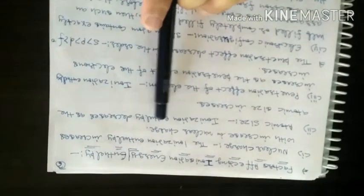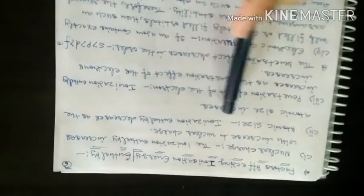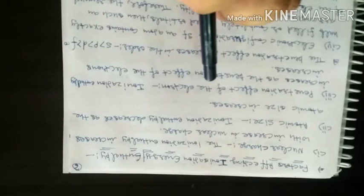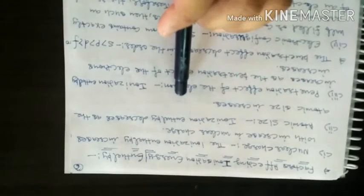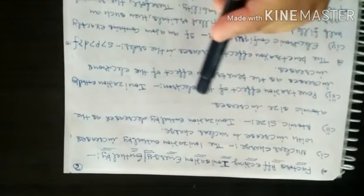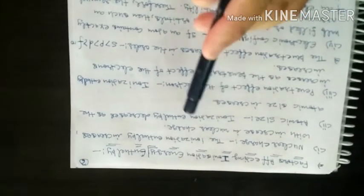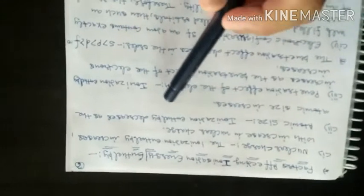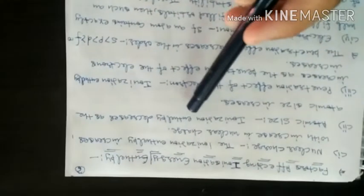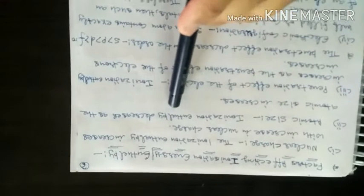The second factor is atomic size. Ionization enthalpy decreases as atomic size increases. As we go down the group, atomic size increases, the nucleus-to-electron distance increases, the force of attraction becomes weak, and the electron can be removed more easily with a smaller amount of energy.